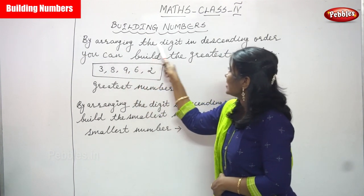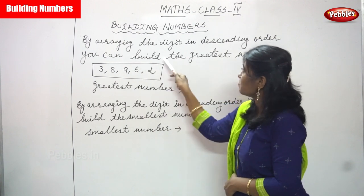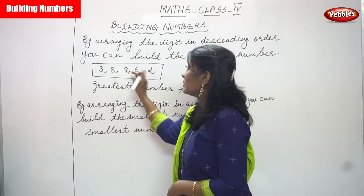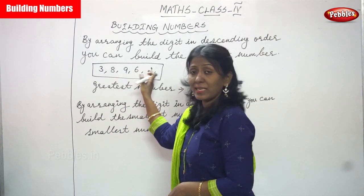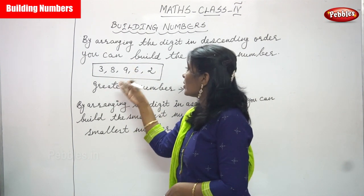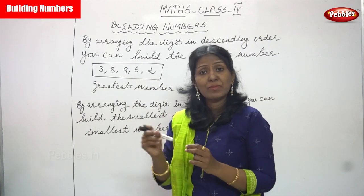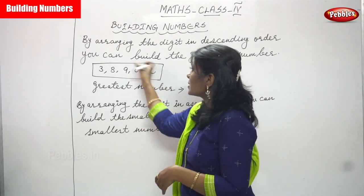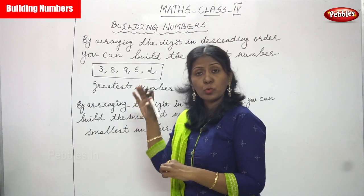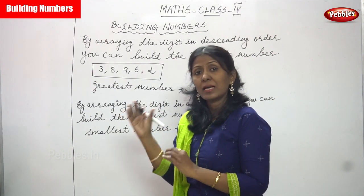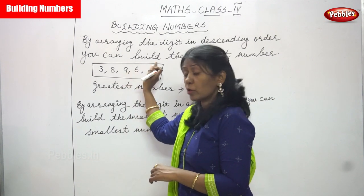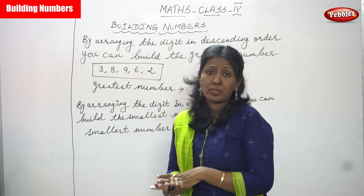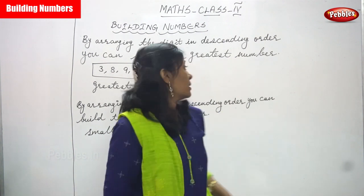By arranging the digits in descending order you can build the greatest number. In that box I have given some numbers — they are separately given: three, eight, nine, six, two. Because a comma is given between the numbers, you read them individually: three, eight, nine, six, two. You have to arrange these numbers in descending order to make the greatest number. Now we start the class.